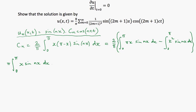That is a standard formula and I can go to the formula sheet to find it. The formula sheet tells me it's (1/n²)·sin(nx) minus (1/n)·x·cos(nx), evaluated between 0 and π, remembering I should have a π in front of all that.